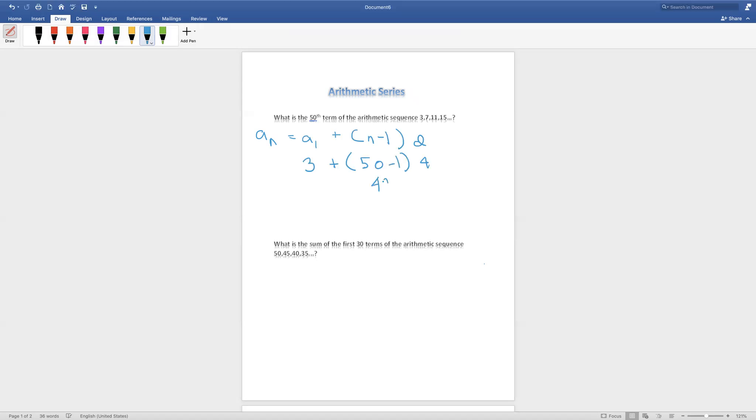49 times 4. We're going to do the multiplication first. 49 times 4, so we get 196, and plus 3, we get 199. So that means our 50th term is 199. That's the shortcut to find the nth term. Now, let's move on to the next question.